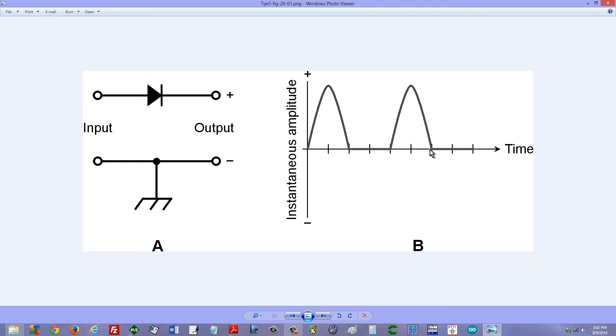A pulsating direct current. Now that type of current is not suitable for most electronic devices. What we need to do in order to make that current smooth is filter it somehow, and there are ways to do that.